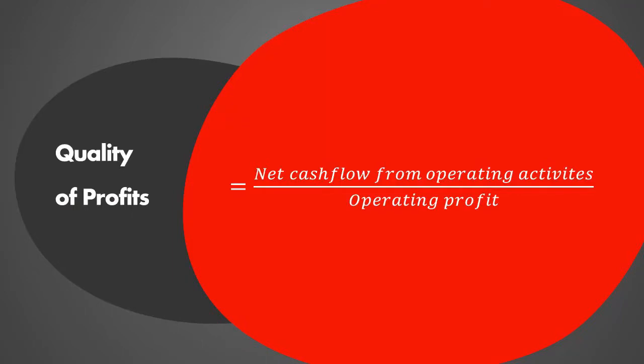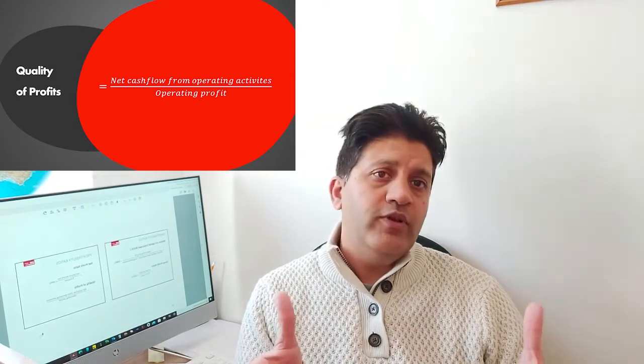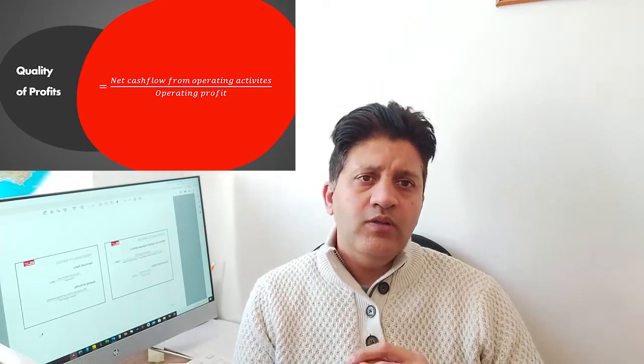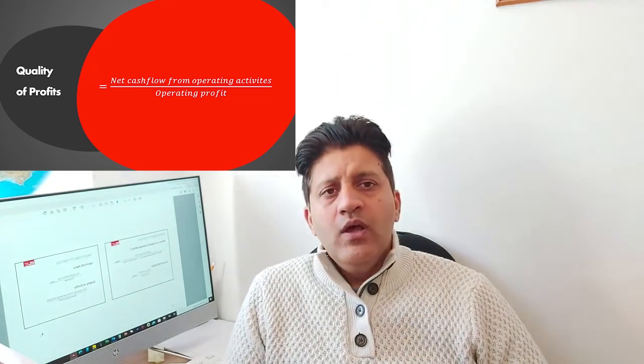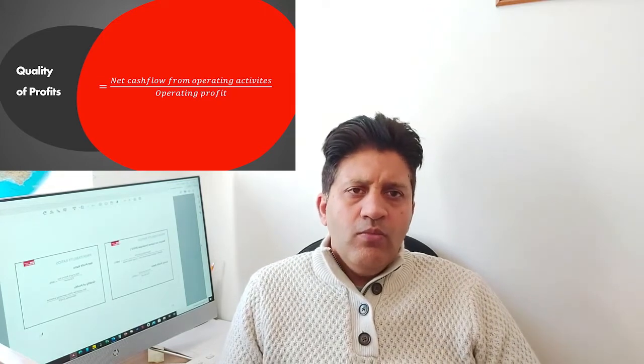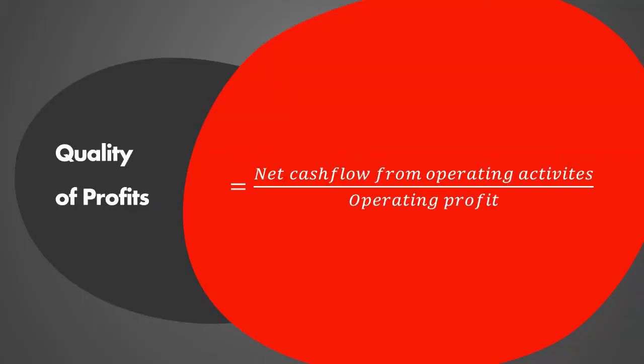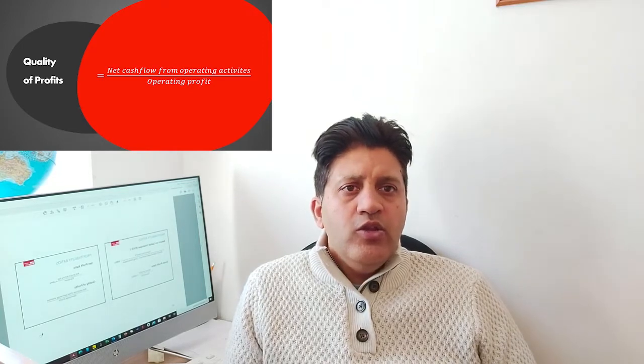If you look at the formula, it uses two figures. It actually uses one figure from a statement of cash flow, and that is the reason that in some books this ratio has been given under the cash flow ratios. However, in essence it tells us about the quality of the profits of that business. It uses the net cash flow from operating activities from the statement of cash flow, and this is divided by the figure of operating profit. By standard, the result of this ratio should be one — so if you are showing a profit of 1 million in your income statement, the actual cash which you have generated from that should also be 1 million.